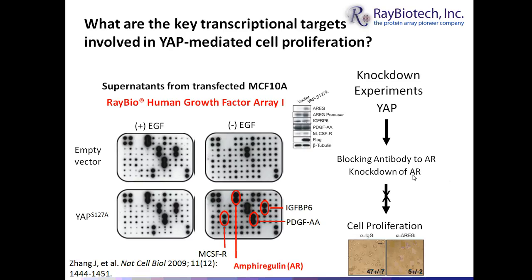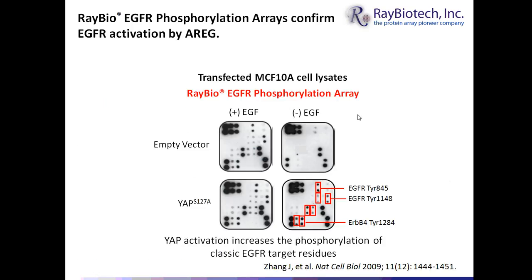Interestingly, this was a non-cell autonomous effect — by blocking amphoregulin, they saw inhibition of transformation in cells that did not express the constitutively active YAP. Daniel's group then recognized that amphoregulin is a well-known ligand for the EGF receptor.